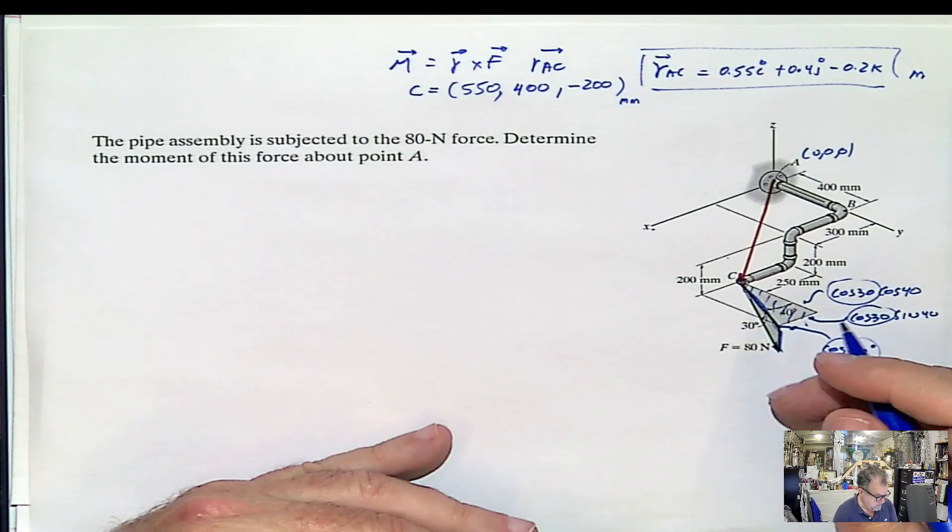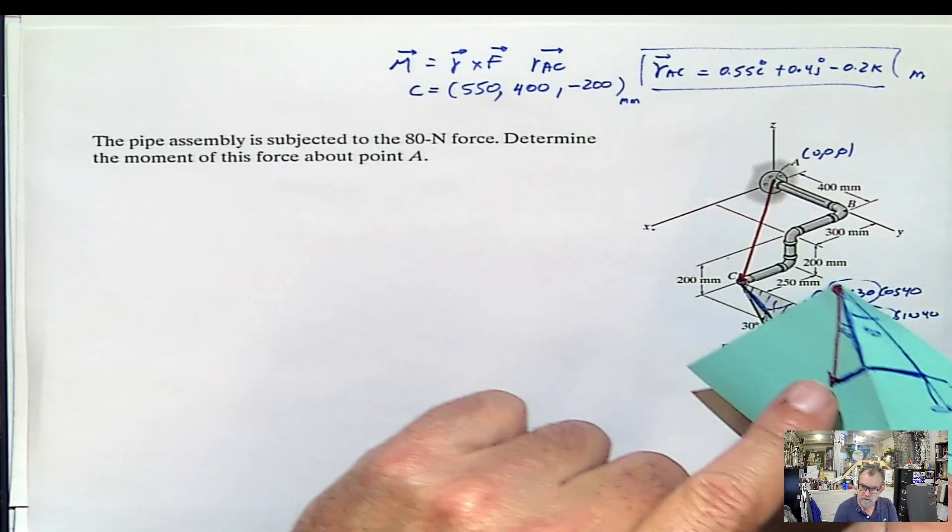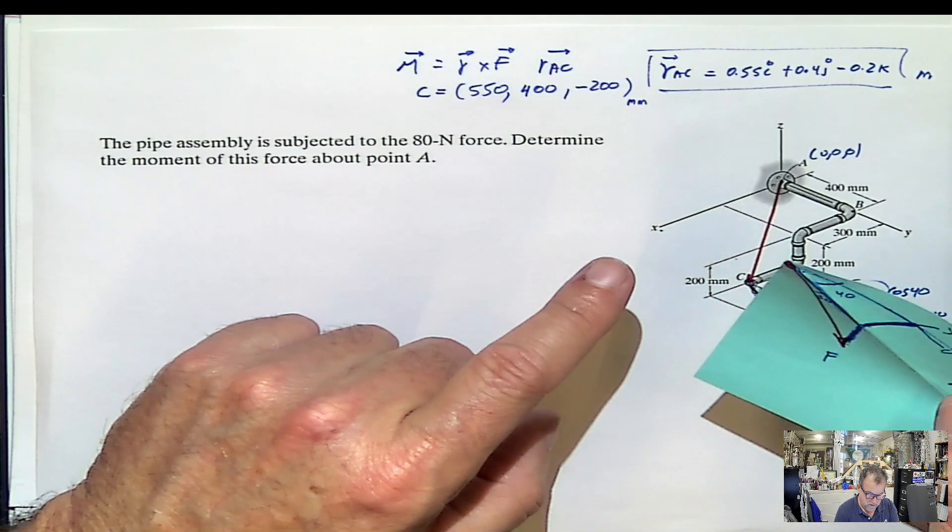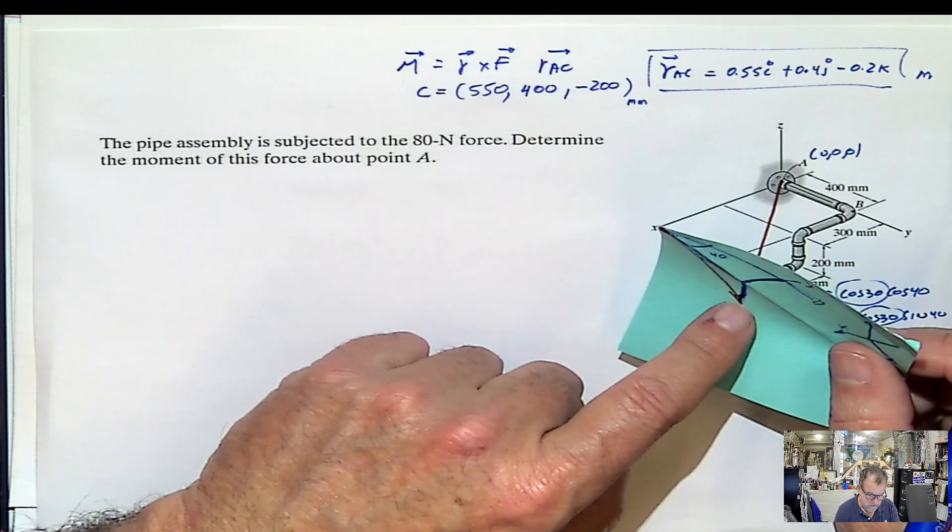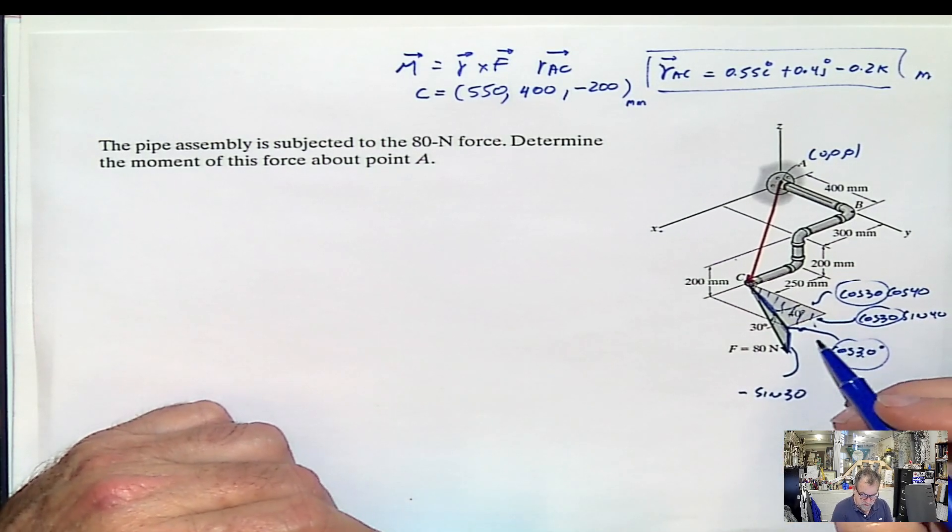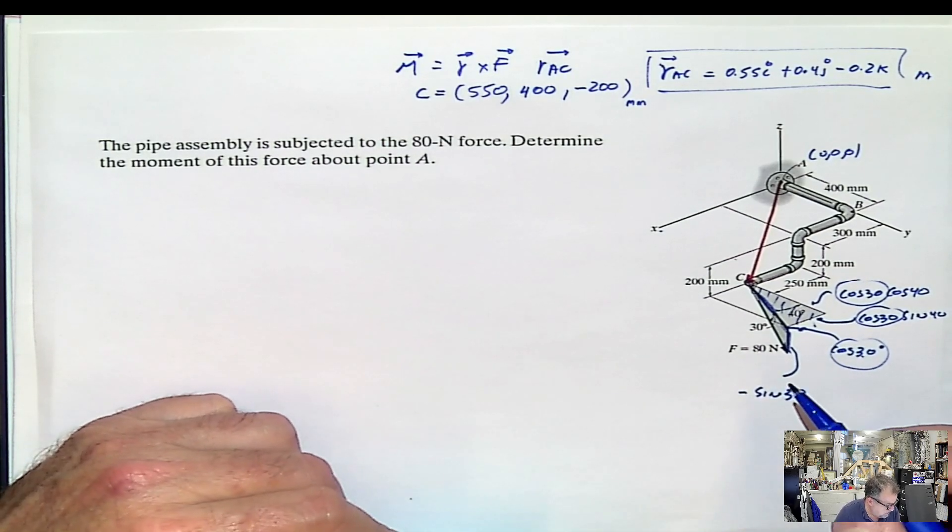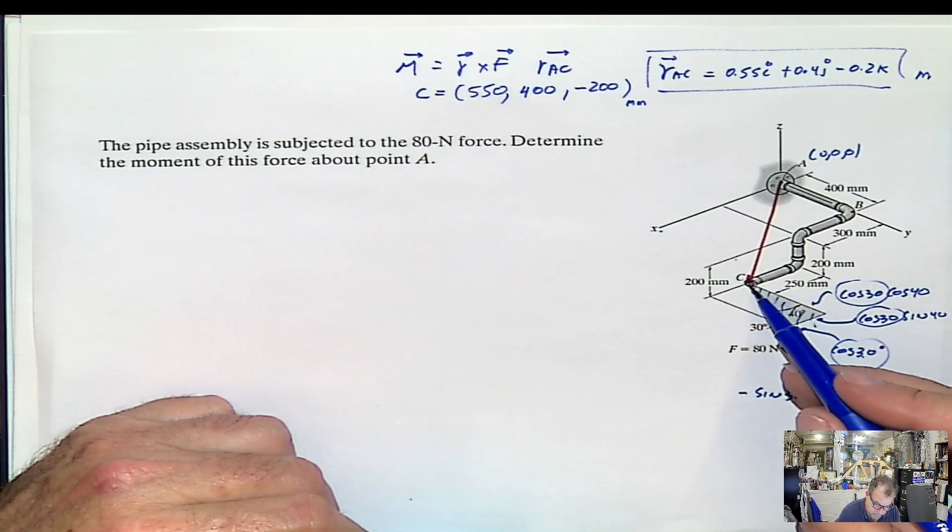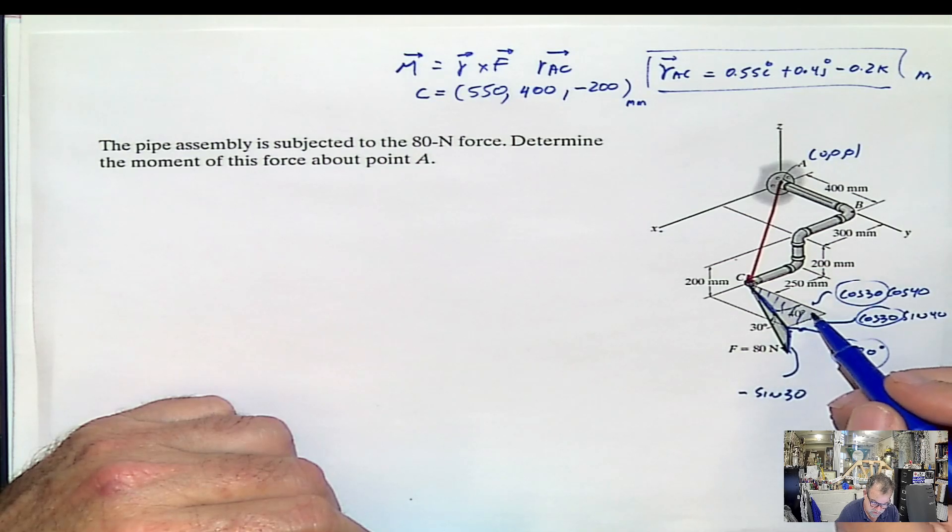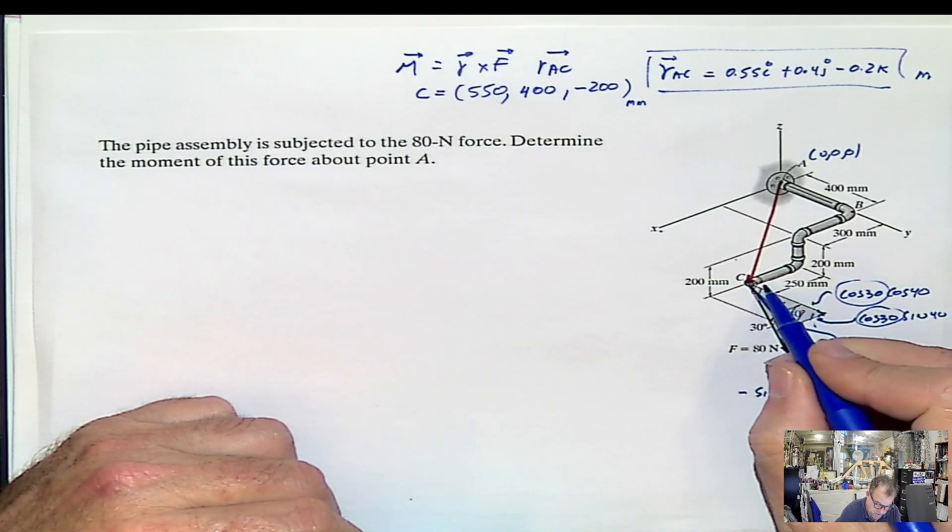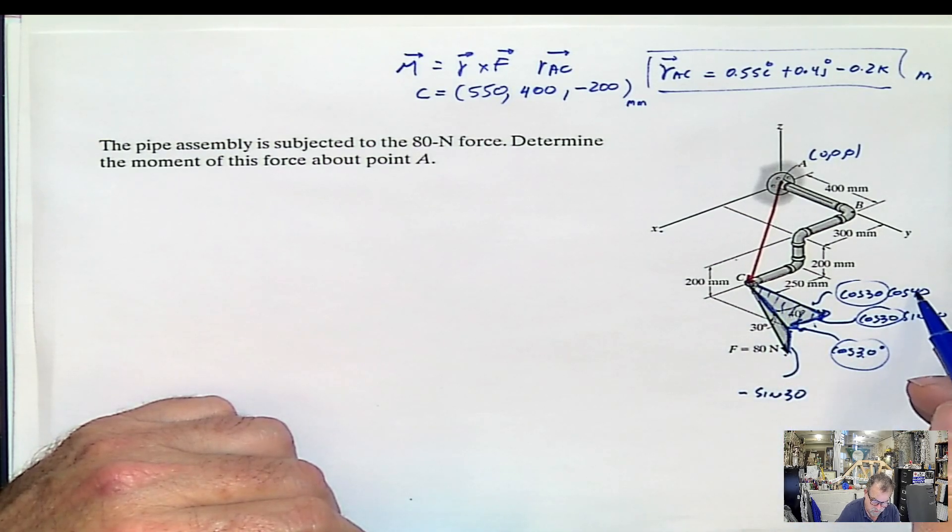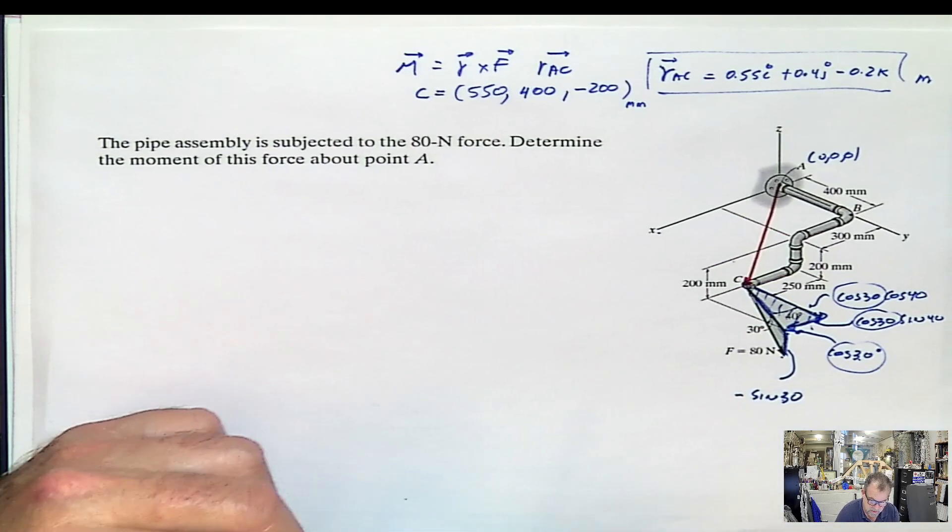And this one will be the same cosine 30 multiplied by sine 40. And this one is the easiest one. This one is this value here. This is actually coming downward, meaning it's going to be negative sine 30. So let's check the directions again. So this one comes in the positive direction for x and y, meaning this is going to be positive. And this is going to be positive. And I have to go down. Positive, positive, negative. Correct. And that will be the unit vector of the force.